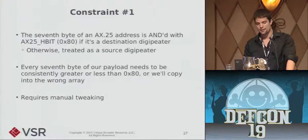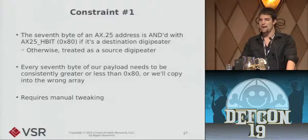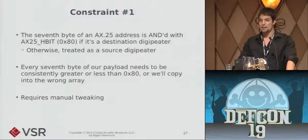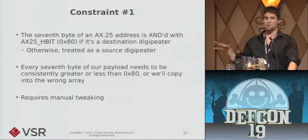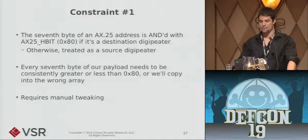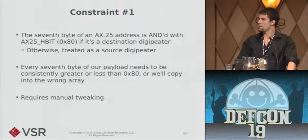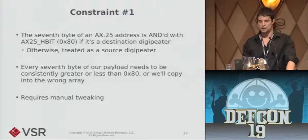Looking at the sad code: at the top line they're just reading that length value right out of the frame data, using it as an upper bound for a loop that copies data in seven-byte AX25 address-size chunks into either the destination or source array — and those arrays are living on the stack. There's also a constraint: the seventh byte of every AX25 address is ANDed with a flag indicating whether it's a source or destination digipeater. That means in our payload, every seventh byte needs to be consistently greater or less than 0x80, otherwise chunks might be copied into different arrays. This required me to go through the exploit and manually check that constraint was satisfied.